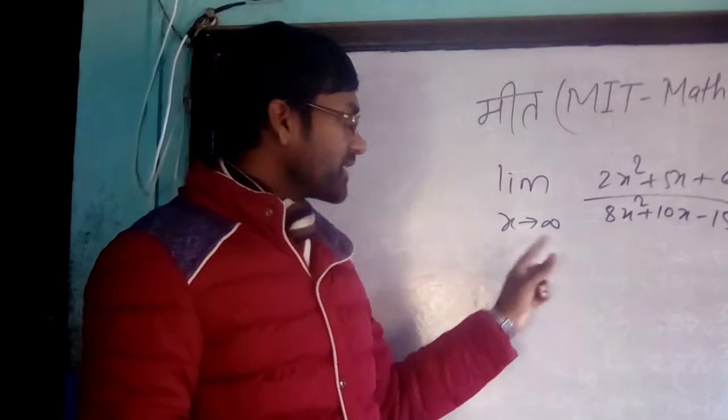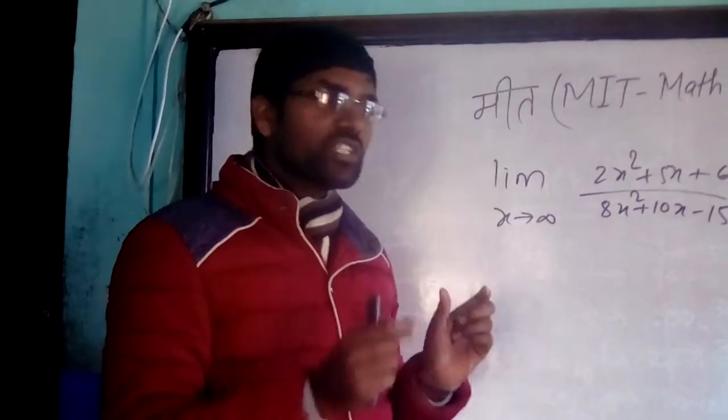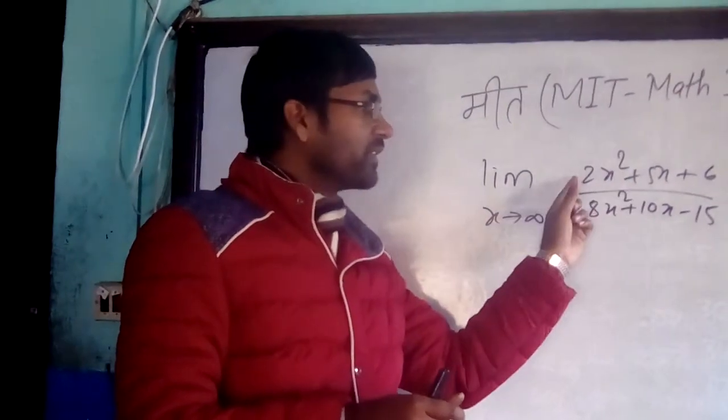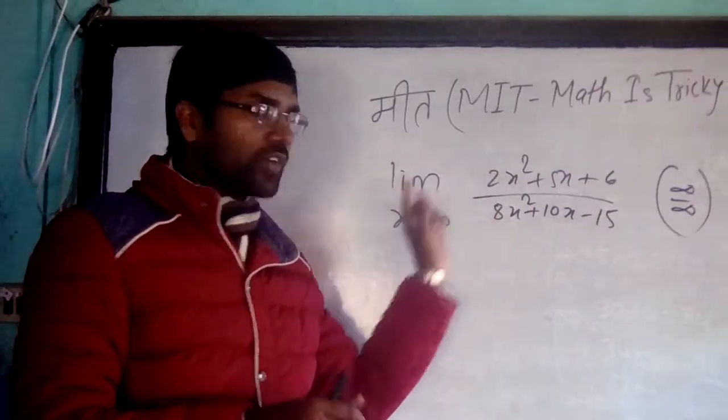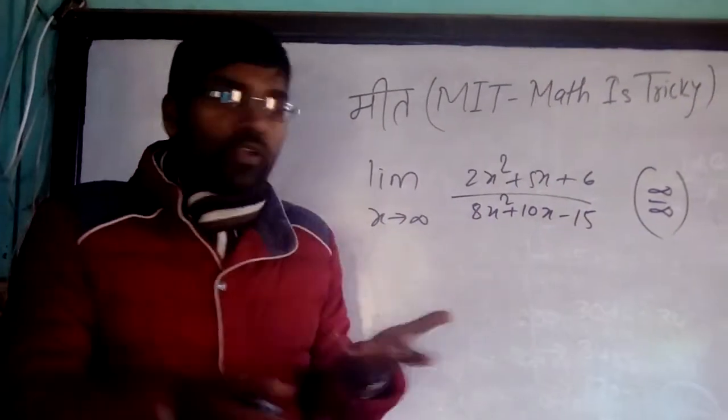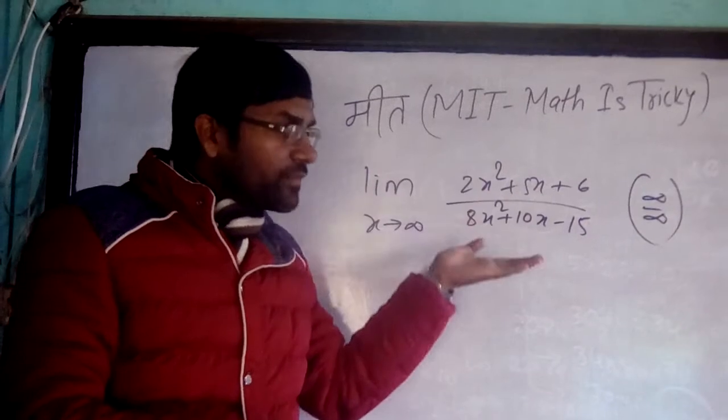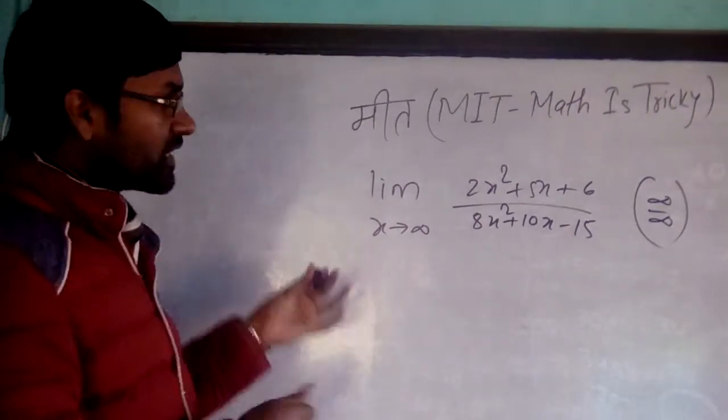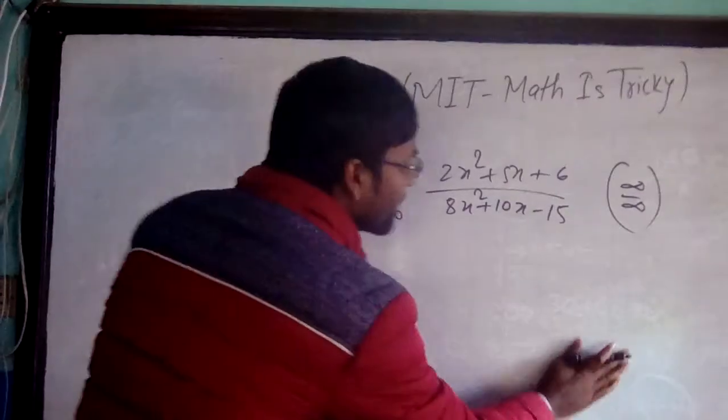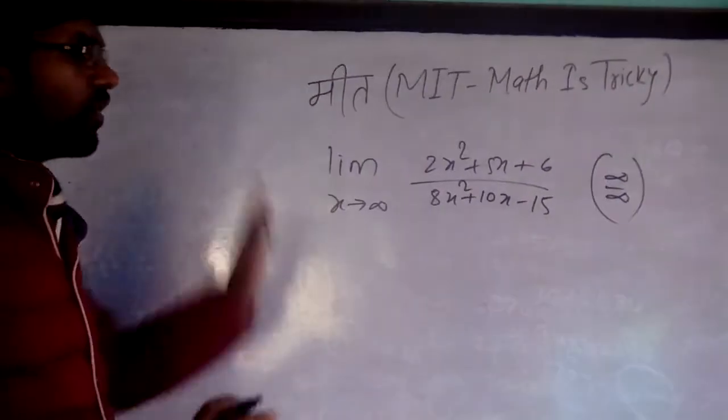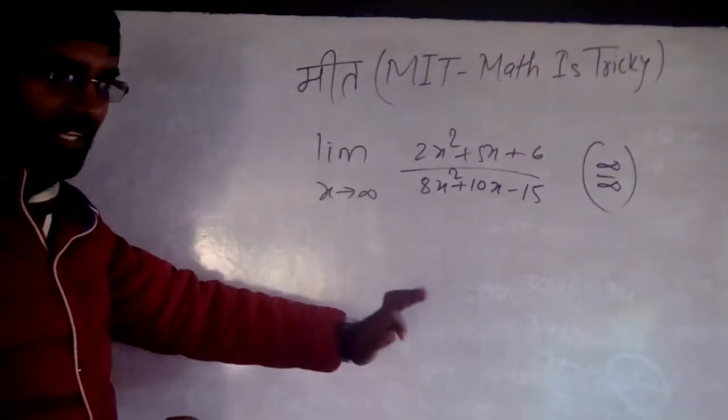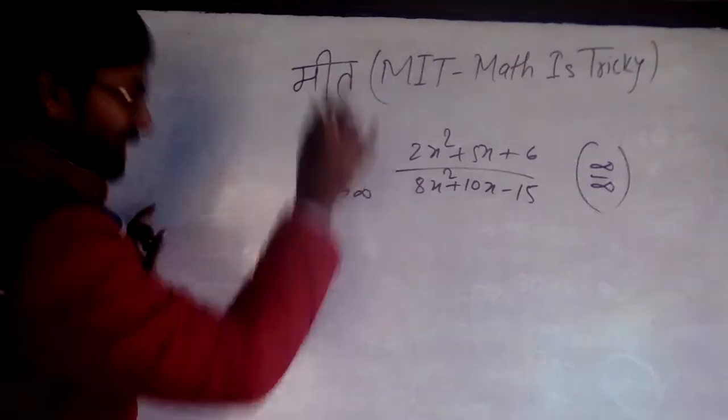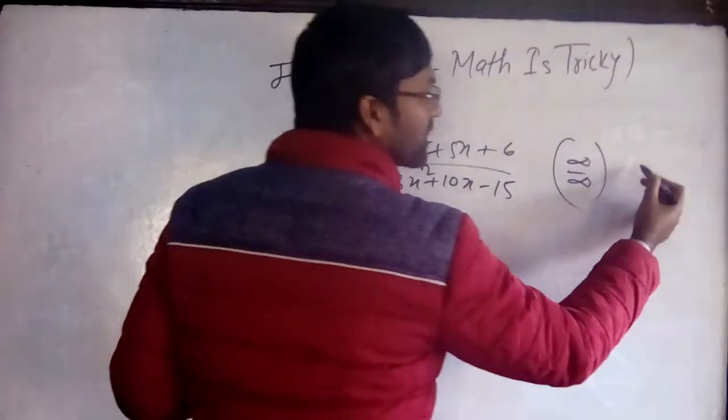You might have seen this type of problem. When the limit takes infinity by infinity form when x tends to infinity, we simply take the highest term common from numerator and denominator. That's the traditional process. But you don't have to solve this way. The answer is 1/2.